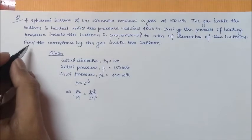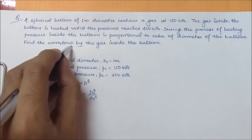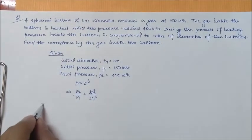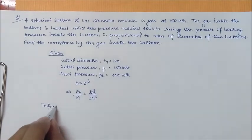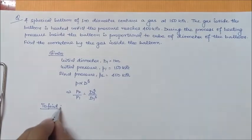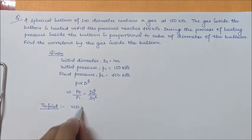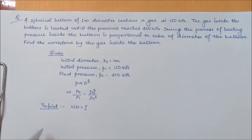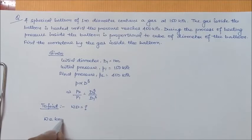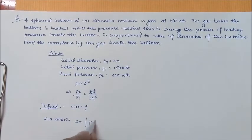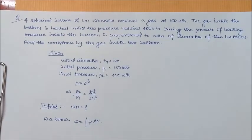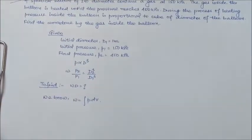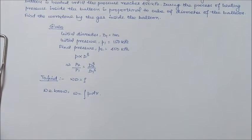What we have to find out from the question is the work done. To find work done, we know w is equal to integral pdV for closed system. As this is a closed system, so we are using this formula integral pdV.